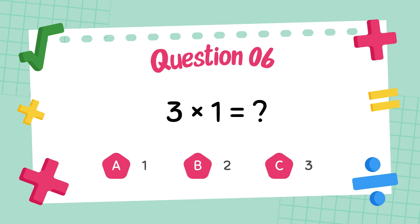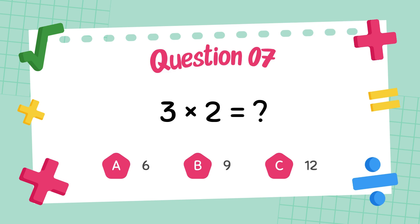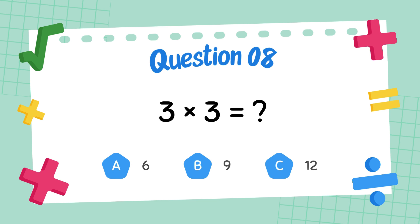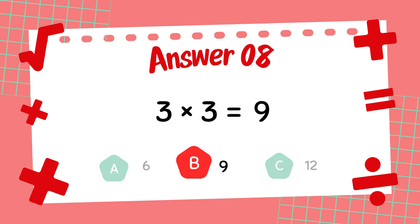What is 3 times 1? The answer is 3. What is 3 times 2? The answer is 6. What is 3 times 3? The answer is 9.